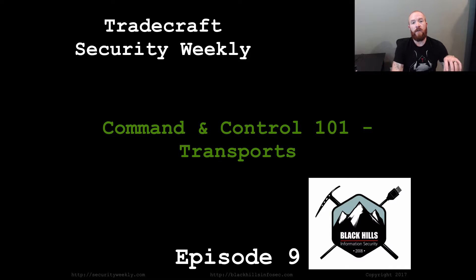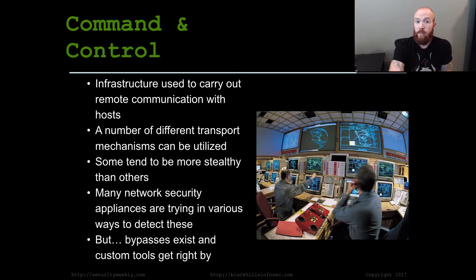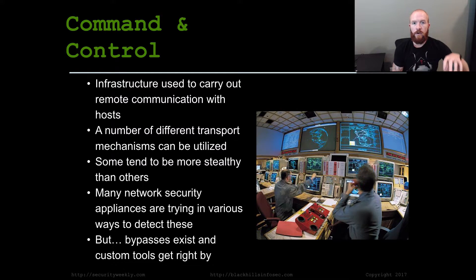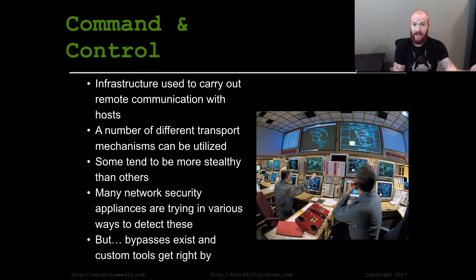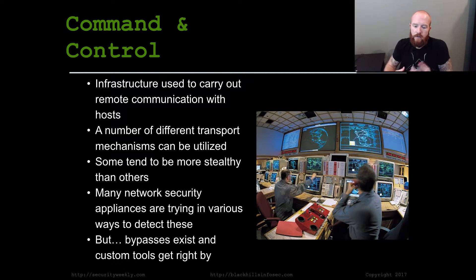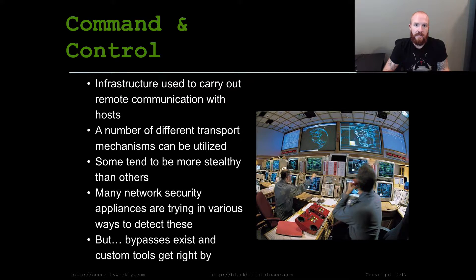I'm not specifically going to be covering the payloads that would actually initialize some of these communications out of a network — just for the sake of time, that will be covered in probably another episode. Command and control is essentially the infrastructure that's used to carry out remote communication to hosts on a network. If I send a phishing message with a payload attached, I have to have some means for communicating out of that network to carry out more attacks.